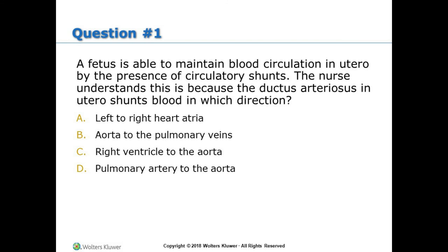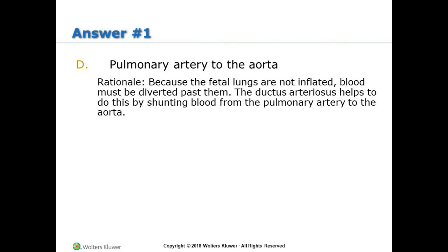Practice Question 1: A fetus is able to maintain blood circulation in utero by the presence of circulatory shunts. The nurse understands that the ductus arteriosus in utero shunts blood in which direction? A) Left to right heart atria; B) Aorta to the pulmonary veins; C) Right ventricle to the aorta; D) Pulmonary artery to the aorta. Answer: D — Pulmonary artery to the aorta. Rationale: Because the fetal lungs are not inflated, blood must be diverted past them. The ductus arteriosus accomplishes this by shunting blood from the pulmonary artery to the aorta.